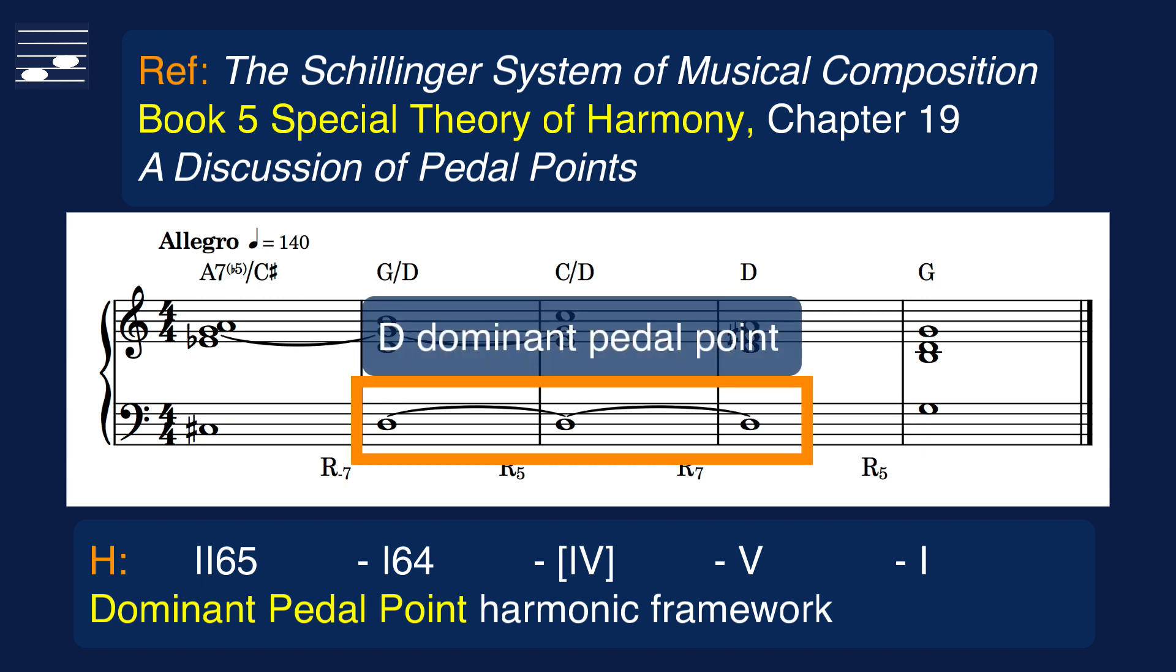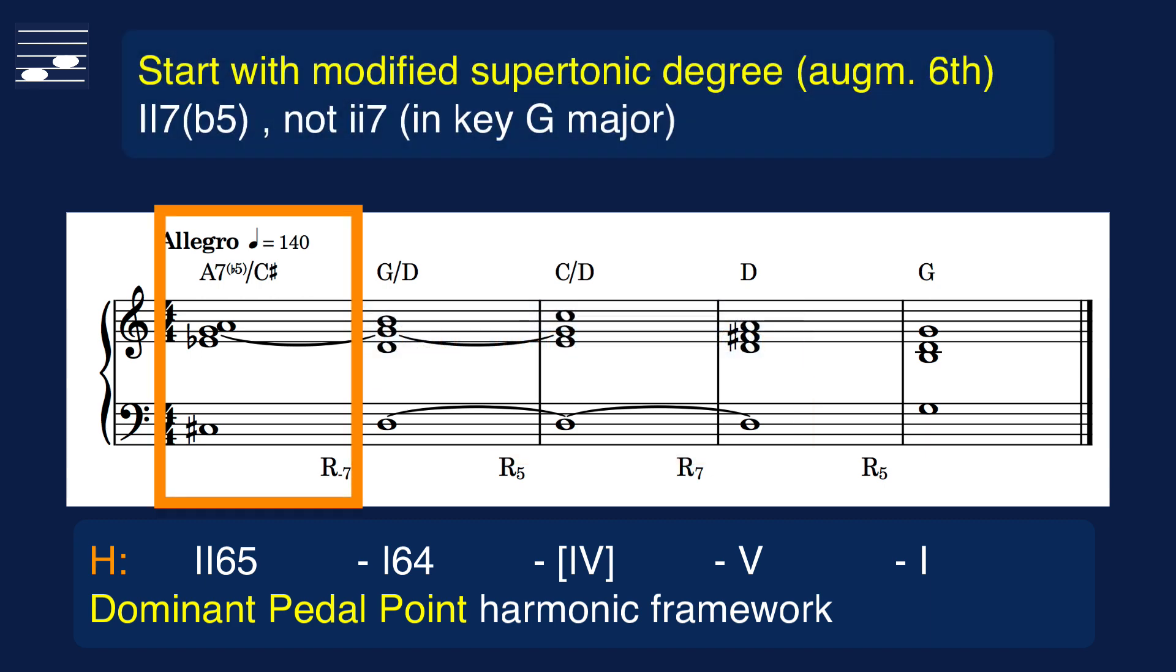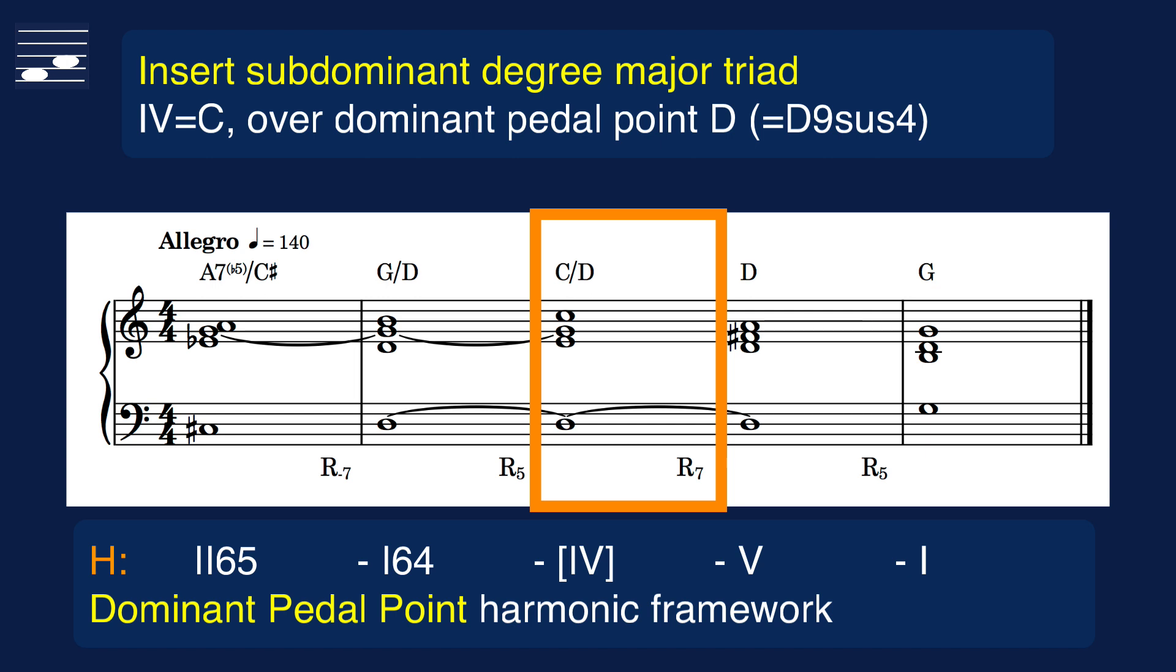The key is G major and note the dominant pedal point D in the bass. The harmony is also labeled below the staff. This framework will be used in the Riemannian transformation application and is somewhat modified from the template dominant pedal point progression. We open with an augmented sixth chord on the supertonic degree, the A7b5 in first inversion position. In the middle I've inserted the fourth degree C major chord over D,